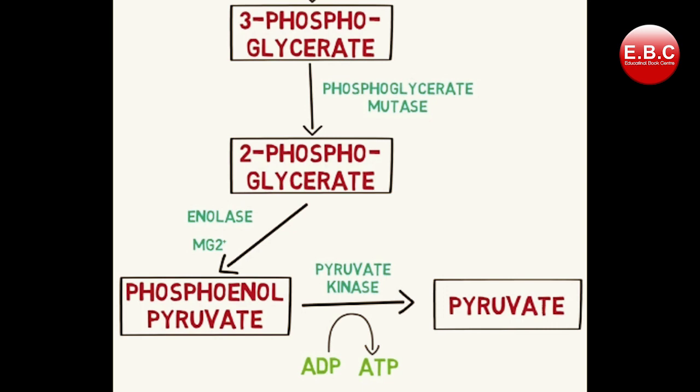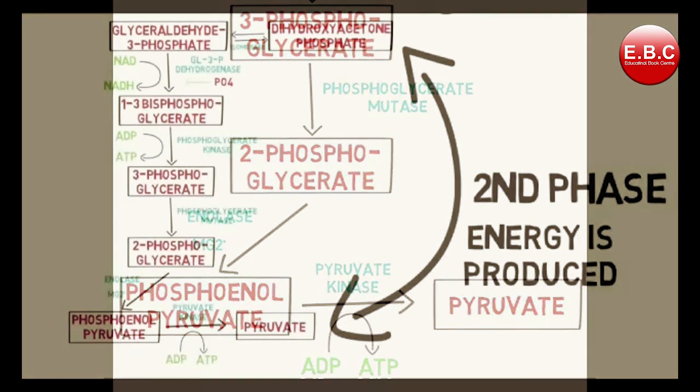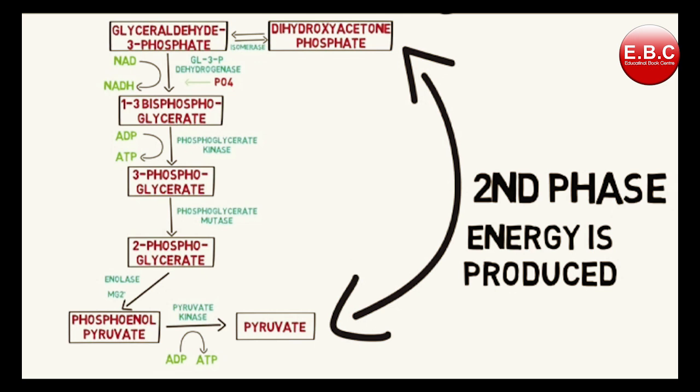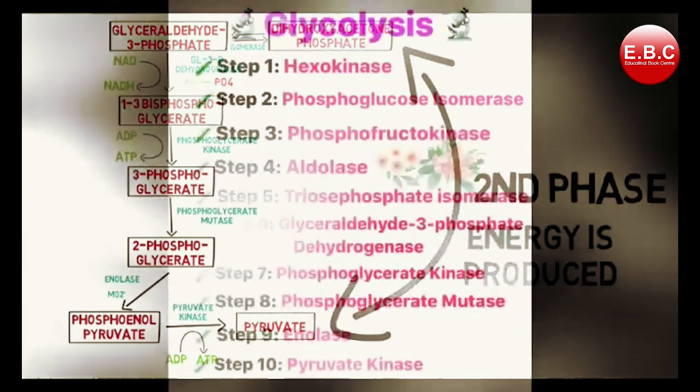Now the final step of glycolysis! Phosphoenolpyruvate is converted to pyruvate by the enzyme pyruvate kinase. The phosphate group in phosphoenolpyruvate is transferred to ADP and converted to ATP. So the second phase is completed. As we can see, energy is produced in the second phase of glycolysis, also called the energy generation phase.